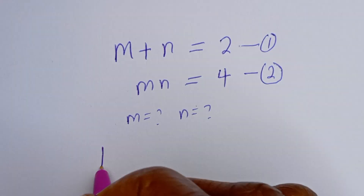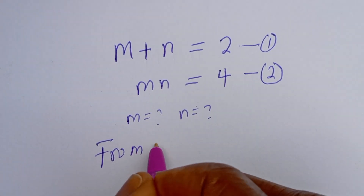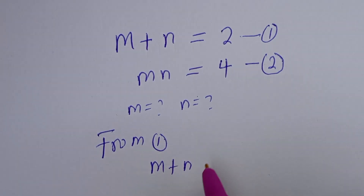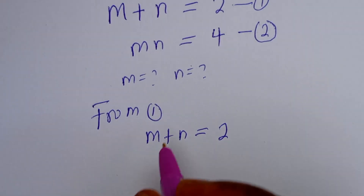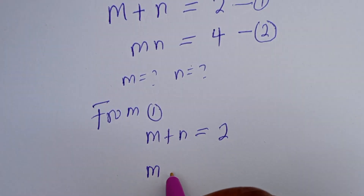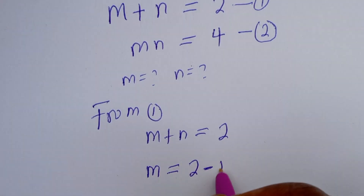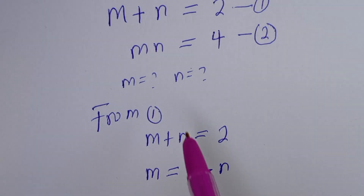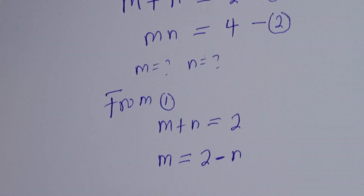Now from equation 1, m plus n is equal to 2. So we make m the subject of the formula: m is equal to 2 minus n. Now let's substitute m equals 2 minus n into our equation 2, which is m n is equal to 4.